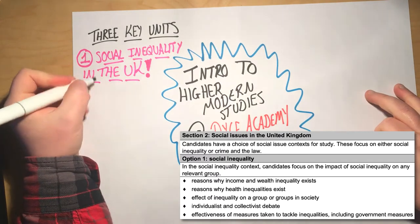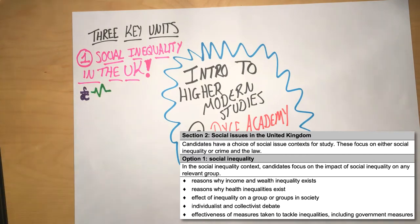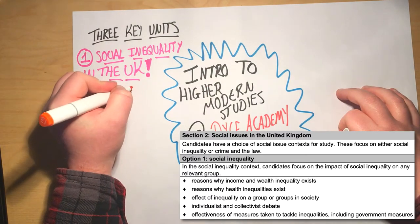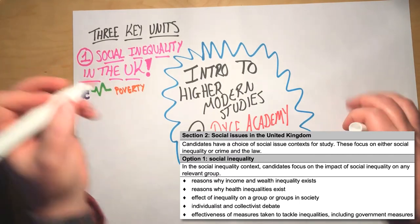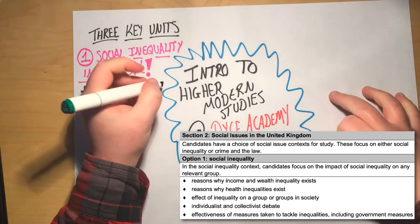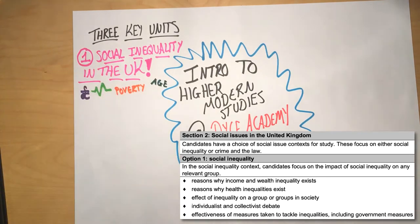We look at health inequalities — why are some people in the UK much healthier than other people? What are the factors involved here? And then looking at these inequalities, we touch on gender issues, we touch on racial issues and how they're all involved when we look at these sorts of inequalities. So as you'll see in all of higher modern studies, there's lots of room for discussion of these controversial and important social and political issues that affect all of us in our society.